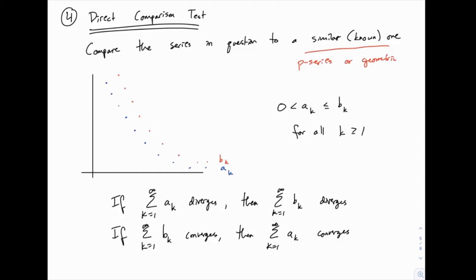Our next test for seeing whether a series converges or diverges is called the direct comparison test. The goal of this test is to compare the series we're interested in to a similar series that we know the answer for. In practice, that means it has to look like a p-series or a geometric series.